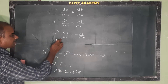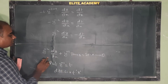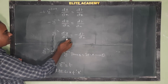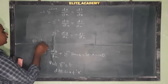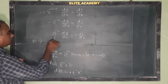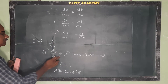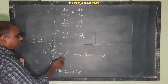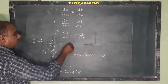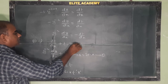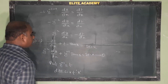Substituting into equation (1): y^(-2)·dy/dx becomes -dt/dx, and y^(-1) becomes t. So equation (1) becomes: -dt/dx + t·tan(x) = sec(x).